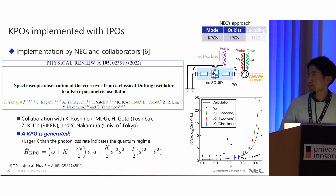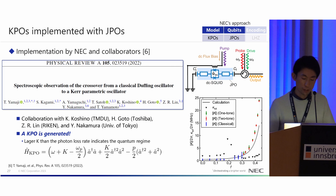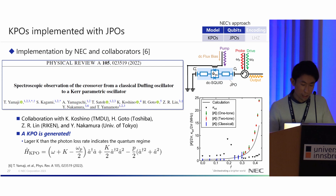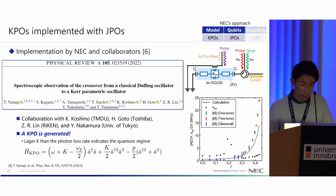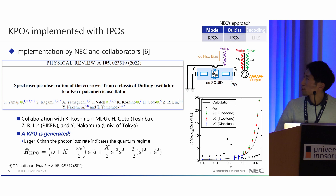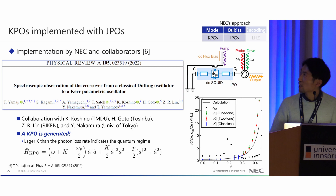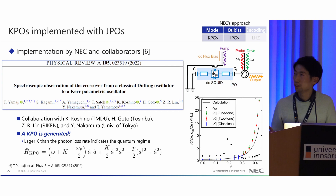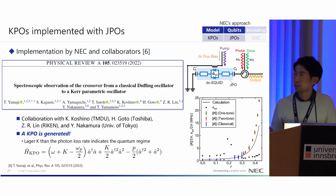We can find that the JPO Hamiltonian has the same form as the KPO, so we can generate KPO behavior using JPOs. NEC also implemented this with collaborators and reported it in a published paper. One main result is that a single KPO is generated physically. This figure shows the Kerr coefficient K and the photon loss rate versus flux bias: for large flux bias, the Kerr coefficient is much larger than the photon loss rate, indicating the system is in the quantum regime where a truly quantum Kerr parametric oscillator can be generated in the circuit.